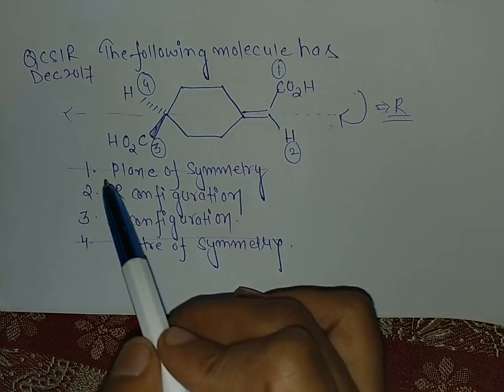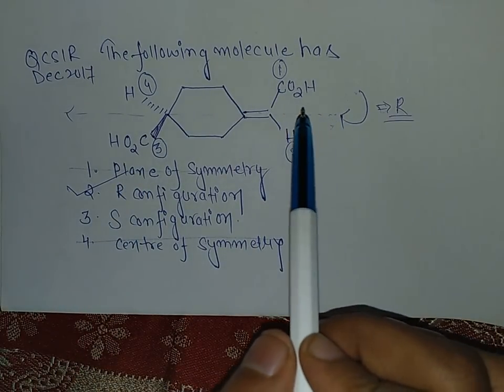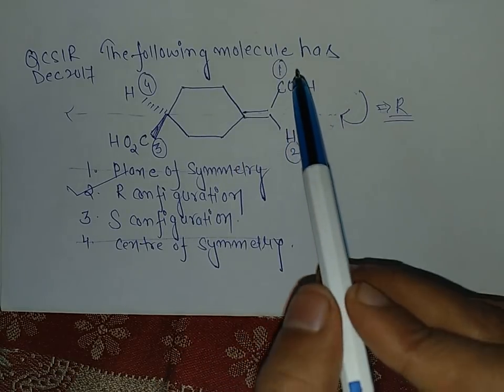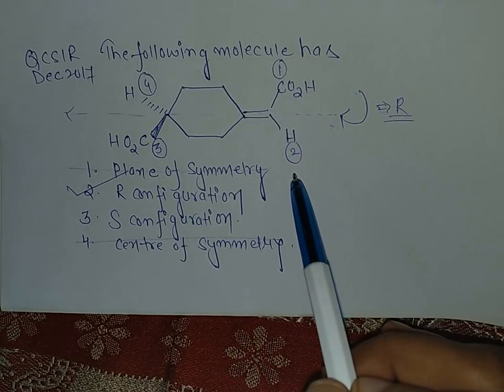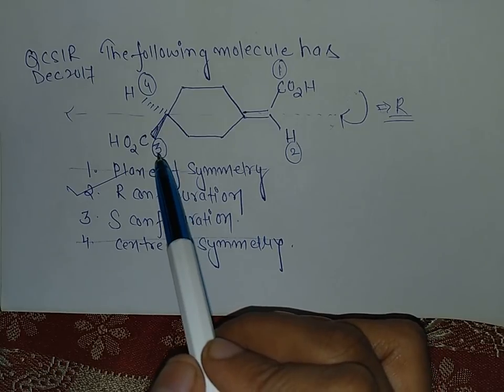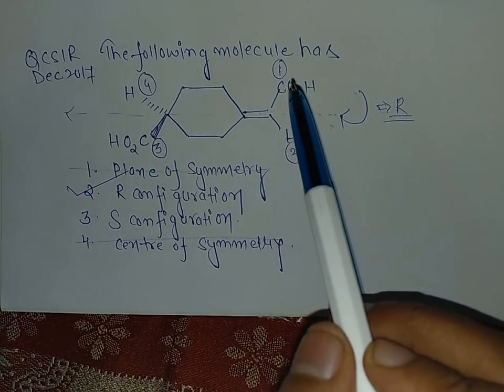So correct option is second. Simple things: pass the axis from the planar side and then number these priority groups. This is first and this is second. Now come to the stereochemistry part. This is a third group and this is fourth group.